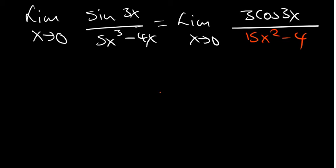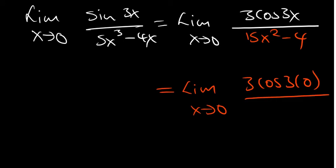So we have the limit as x approaches 0. So we have 3 cos 3 multiplied by 0 over 15 times 0 squared minus 4. So cos of 0... you know 3 times 0 is 0, so cos of 0...